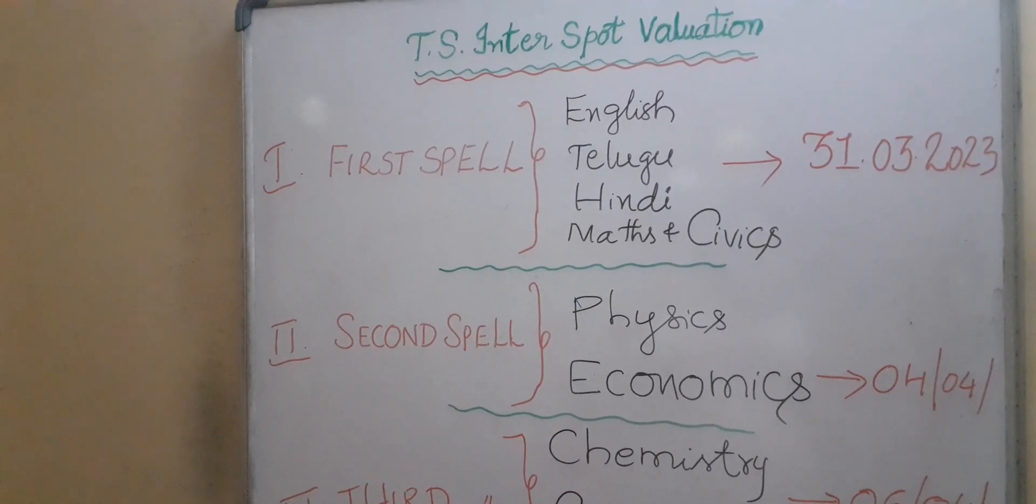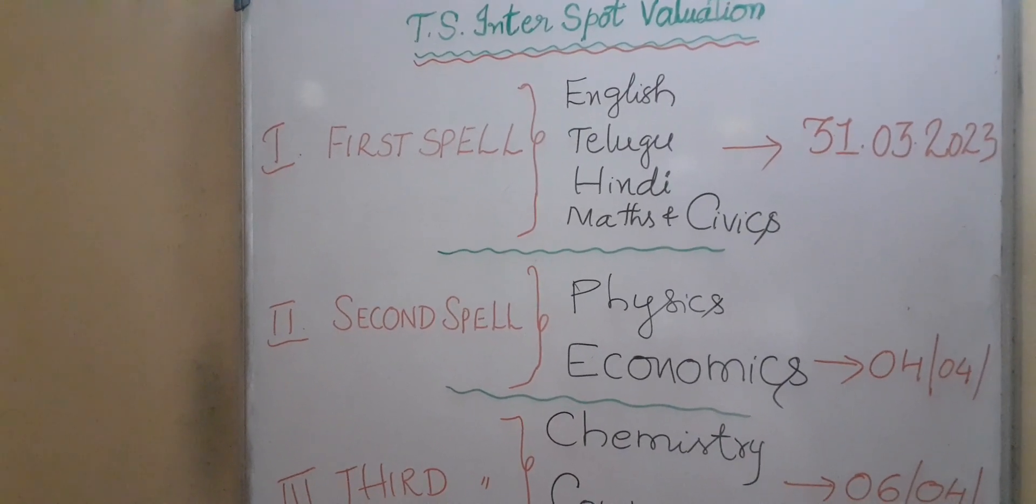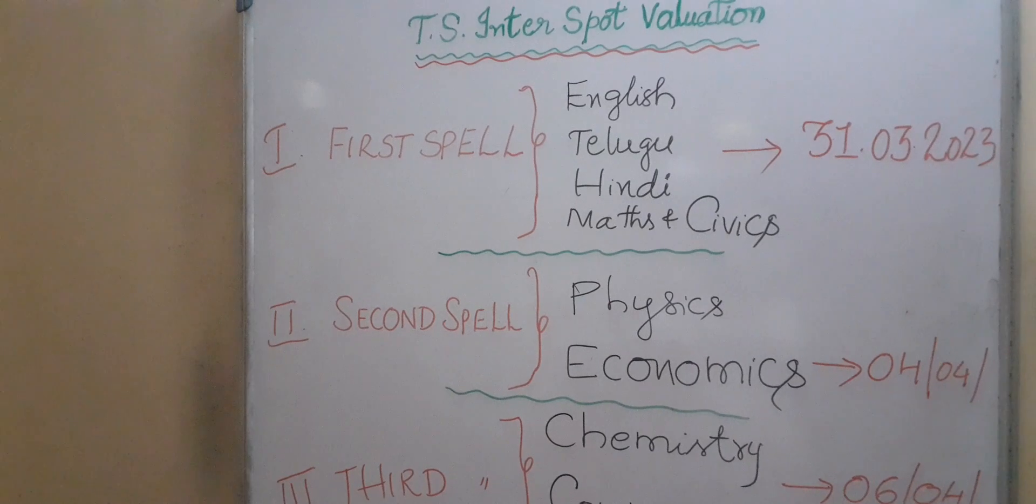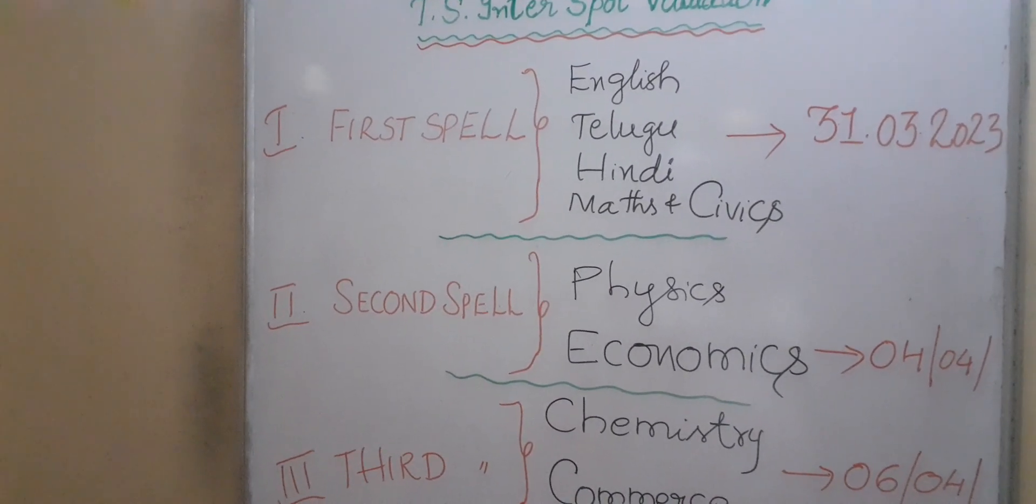This is the schedule for TS paper valuation. Arabic and Sanskrit have already started. For the remaining subjects, it is going to be conducted in four spells or phases.